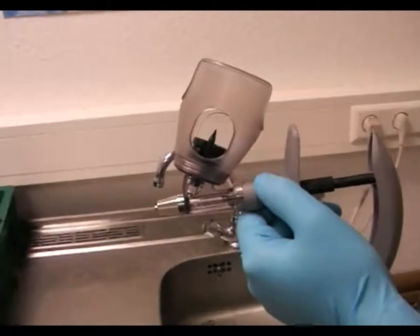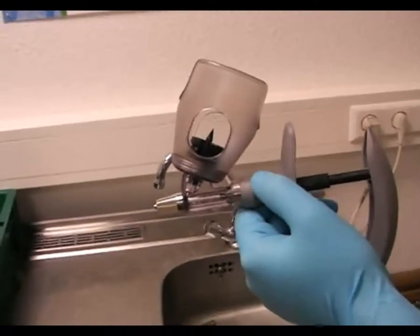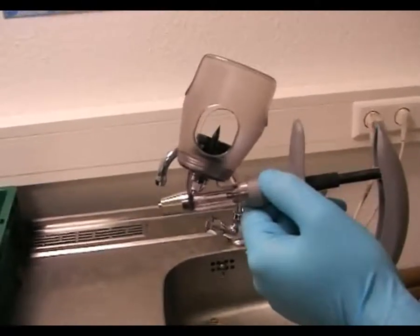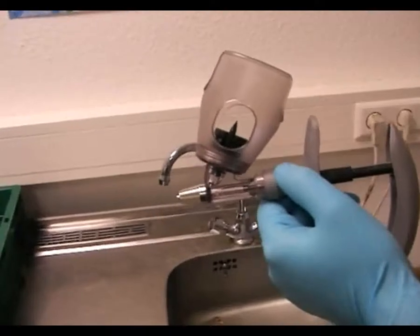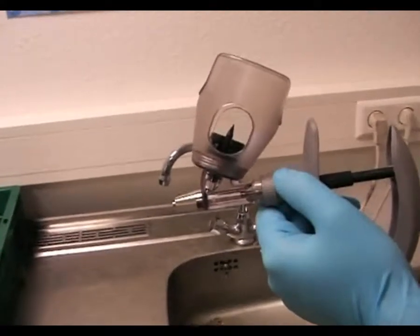Sie sehen, die Spritze besteht aus einem sogenannten V-Griff mit Korb, Flaschenaufnahme und dem darunterliegenden Zylinder mit Metallkanülenansatz.